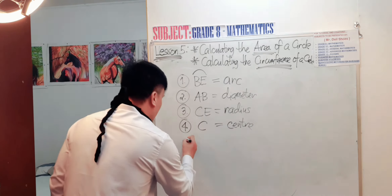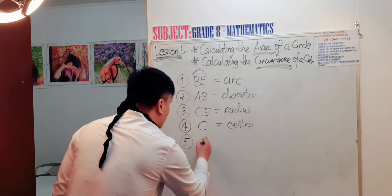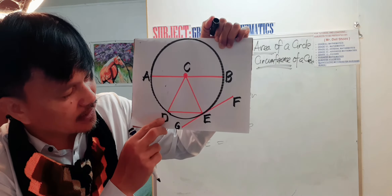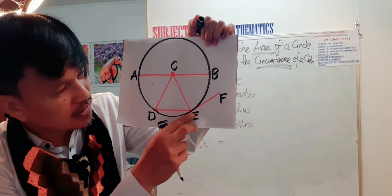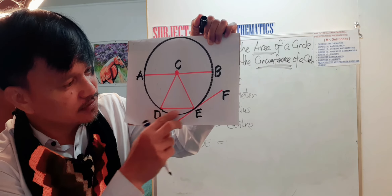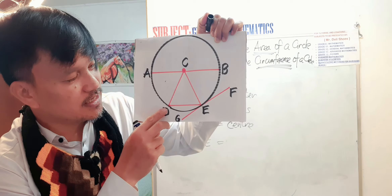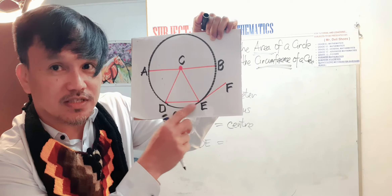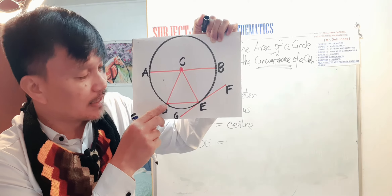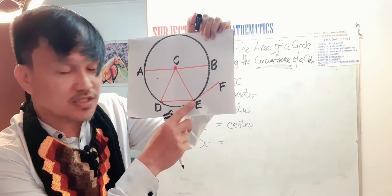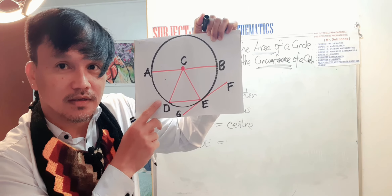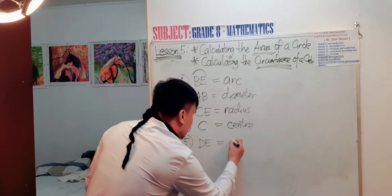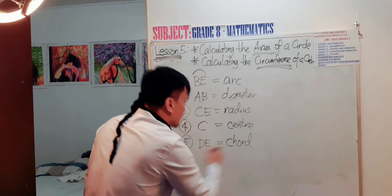D-E is a line from one point on the circumference of the circle to another point on the circumference. The answer is a chord. D-E is a chord.